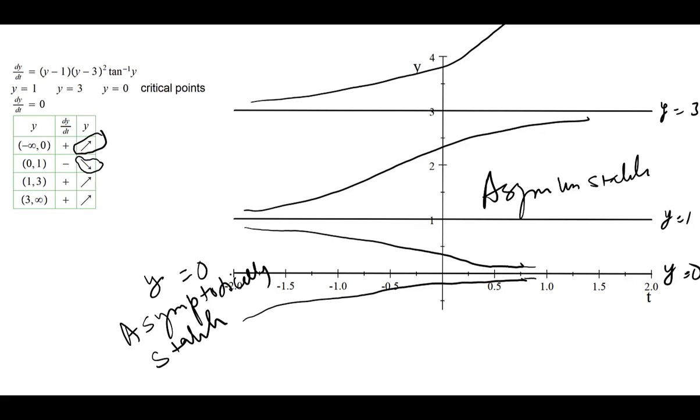And this one, what we have decided to call in this situation, from one side it approaches y equals 3, on the other side it just goes away. Alright? And so here we call it asymptotically semi-stable.